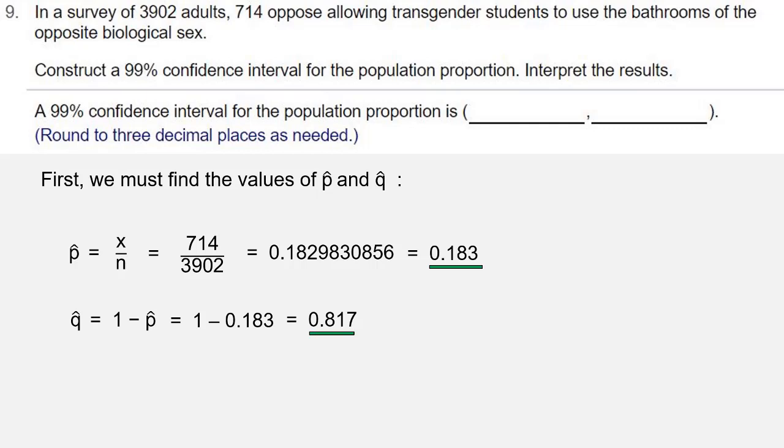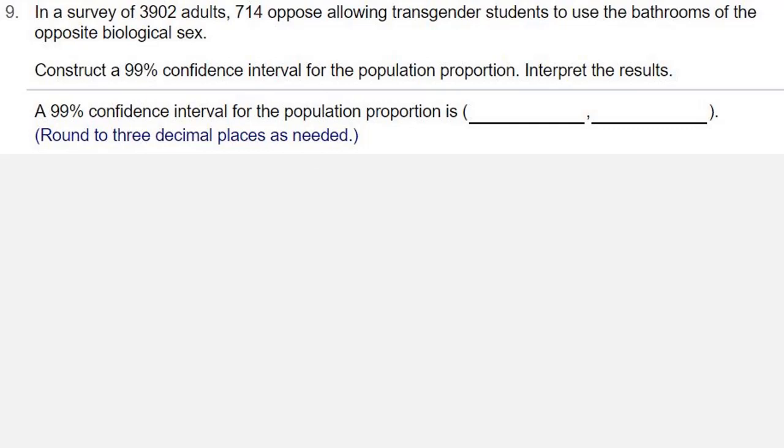We'll need that value to construct the margin of error, which is important in finding the confidence interval. The margin of error has a formula, and that formula has a z-score inside. We need our level of confidence. The 99% level of confidence yields a z-score value of 2.575.